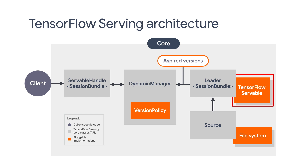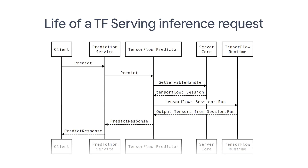The dynamic manager applies the configured version policy to determine the next action to take, which could be to unload a previously loaded version or to load the new version. If the manager determines that it's safe, it gives the loader the required resources and tells the loader to load the new version to run the inference via the servable handle. Here's an illustration of the life cycle of a TF Serving inference request for a TensorFlow model. The client sends a prediction request, the TensorFlow predictor will get the servable handle, which is the SavedModel. Then the TensorFlow session will run the model and generate output tensors, which will be wrapped in a prediction response and sent back to the client.